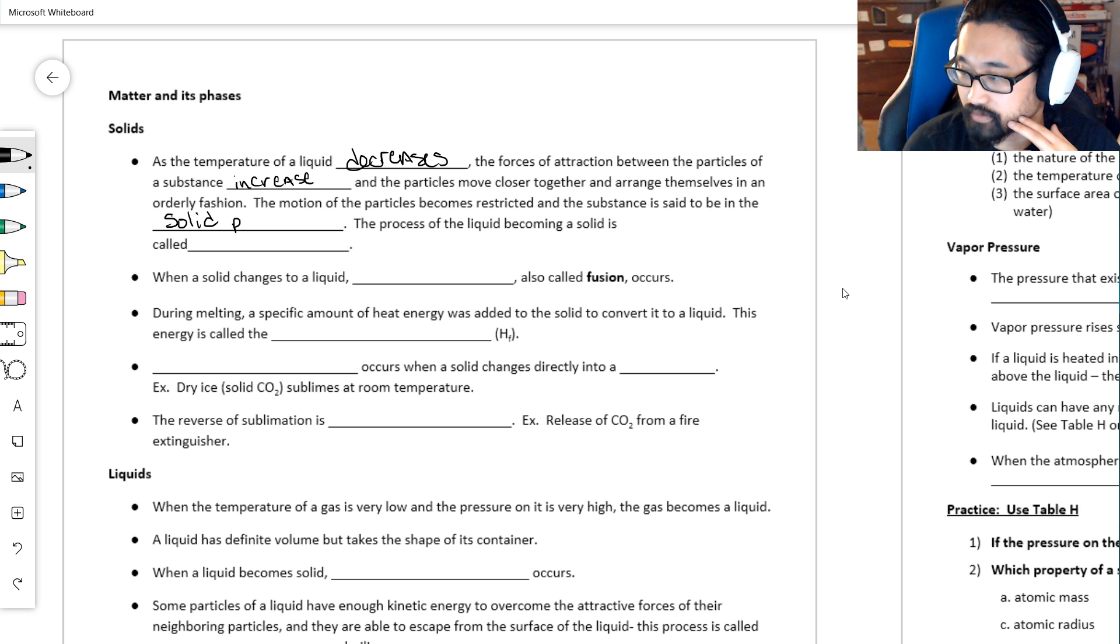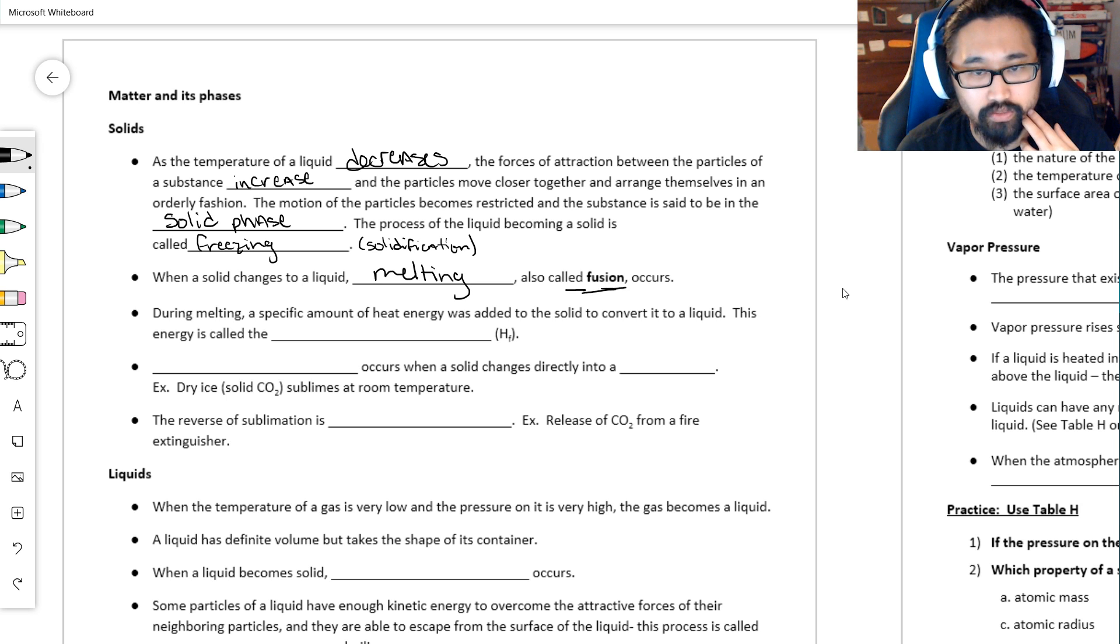The process of a liquid becoming a solid is freezing. You might see solidification at some point—they mean the same thing. It's not super common to see solidification, but if you do, just know what it means. When a solid changes to a liquid, obviously we call it melting. Make a little note—it also might be called fusion.